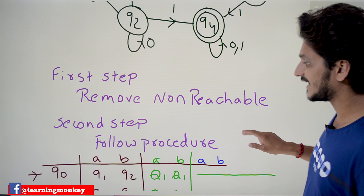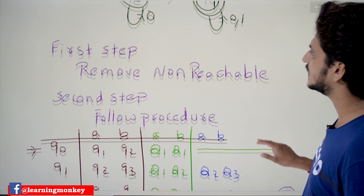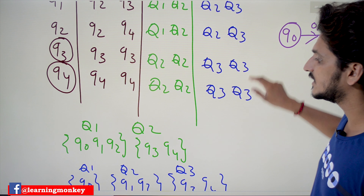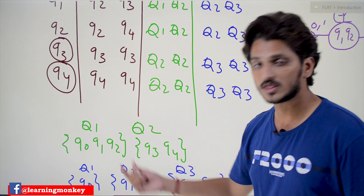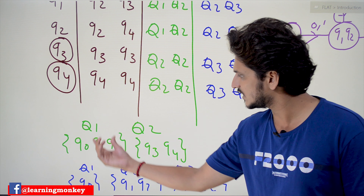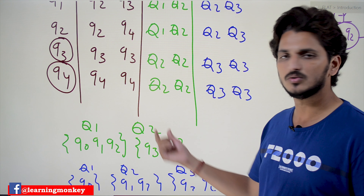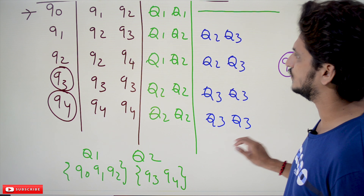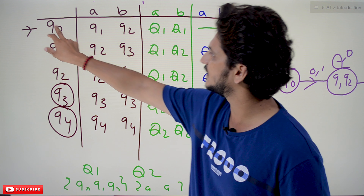The second step is to follow the minimization procedure. We are going to divide the states into final and non-final states. Q3 and Q4 are the final states. Q0, Q1, Q2 are the non-final states. The non-final states are made into one set — we name it Set Q1. The final states are taken as another set — named Set Q2. So we have Set Q1 and Set Q2.